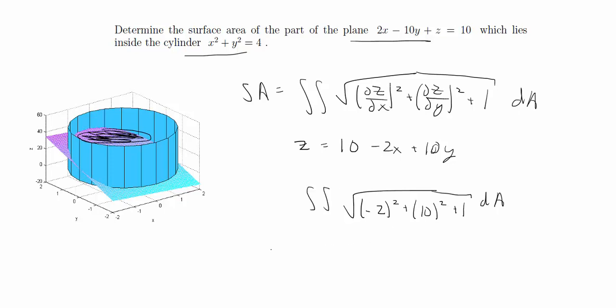That's going to give us the square root of 105. If we convert to cylindrical coordinates from the cylinder, which will be where the double integral is over, we can just say that this is equal to R dR d theta, and R goes from 0 to 2 in this case, and theta goes from 0 to 2 pi.